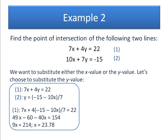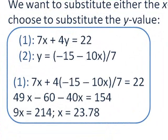Here I'm rewriting my second equation as a function of y. In other words, I'm putting the y on the left hand side and all my x terms on the right hand side. I can now substitute this y value into the first equation. So I have 7x plus 4 times my y value is equal to 22.